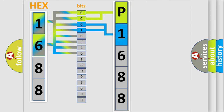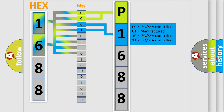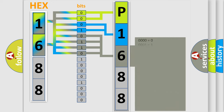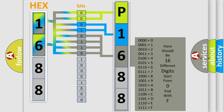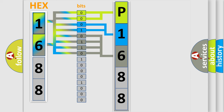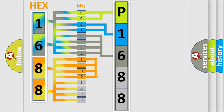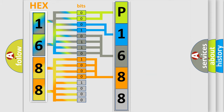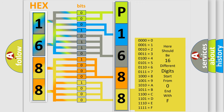The next two bits again determine the second character. The last bits of the first byte define the third character of the code. The second byte is composed of a combination of eight bits. The first four bits determine the fourth character of the code, and the combination of the last four bits defines the fifth character. A single byte conceals 256 possible combinations.